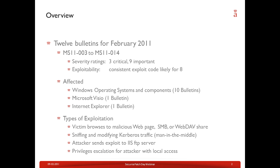This covers bulletins MS11-003 through MS11-014. Based on Microsoft's severity rating, three bulletins were considered critical and nine bulletins considered important. For eight of those bulletins, consistent exploit code is likely or already available in the wild.